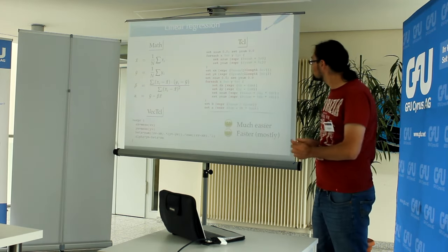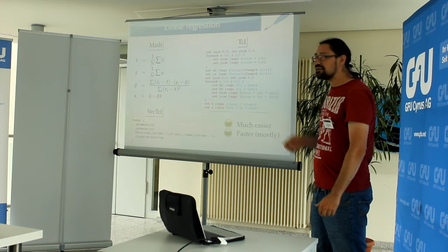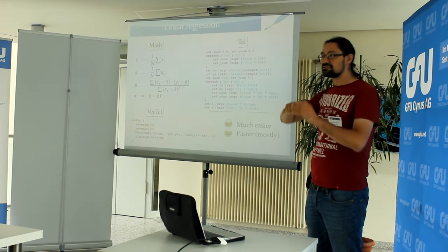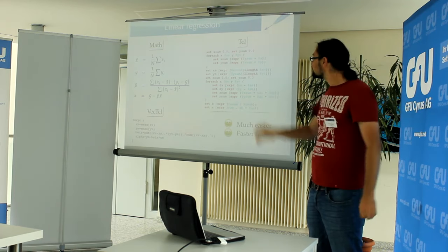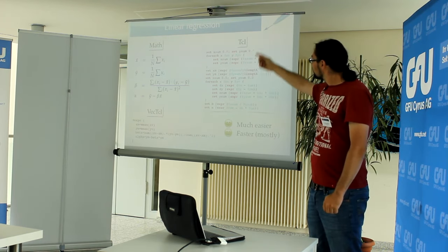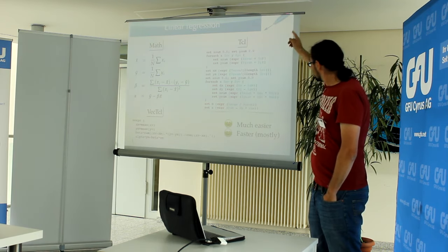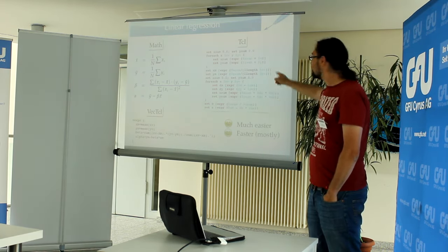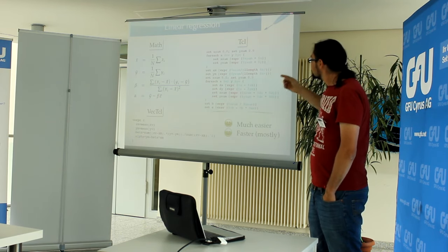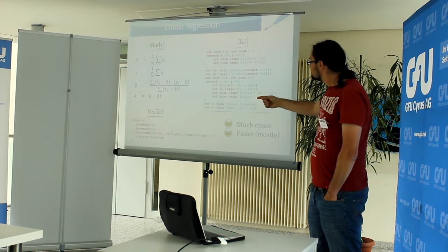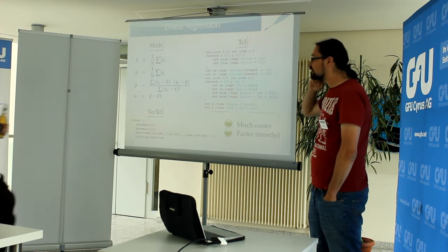As an example I presented last year: if you want to implement linear regression — you have some points and you want to fit a straight line through them — you can look up the formula from Wikipedia, and in pure Tcl it would look like the block of code on the right side with many variables and many loops. But if you use Vecticl, you can just write the equations like you see them in the math.